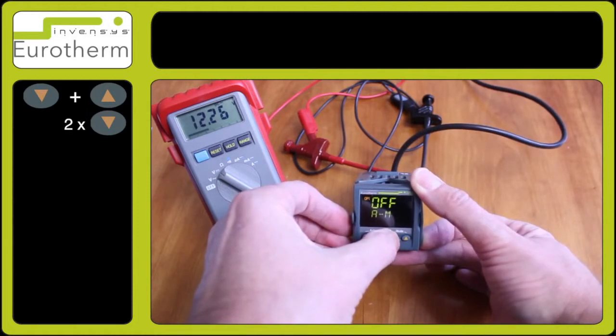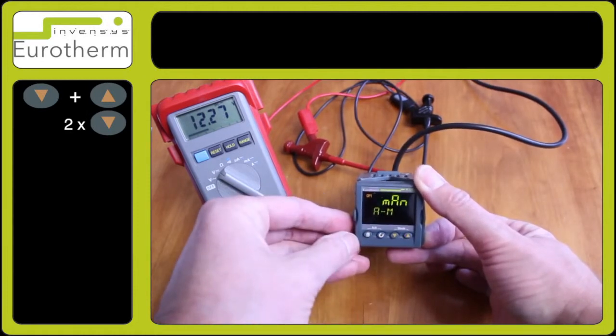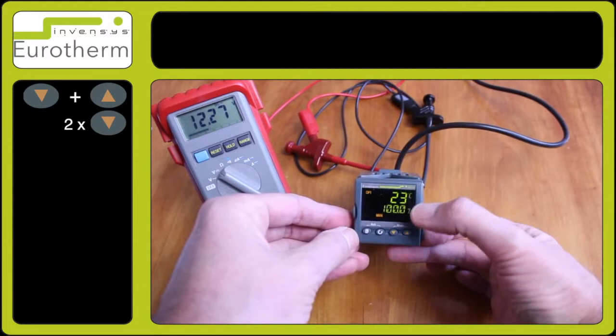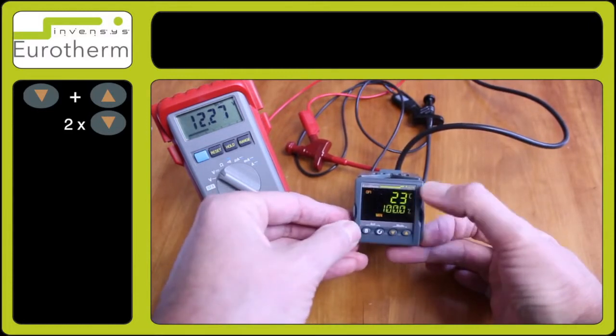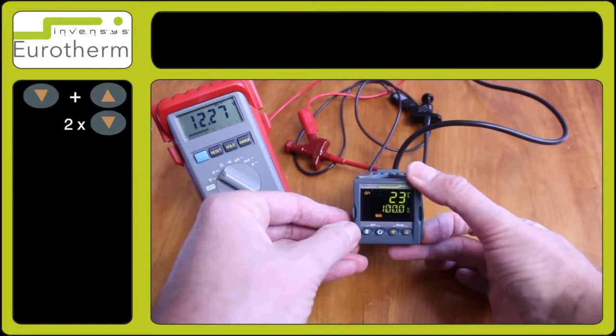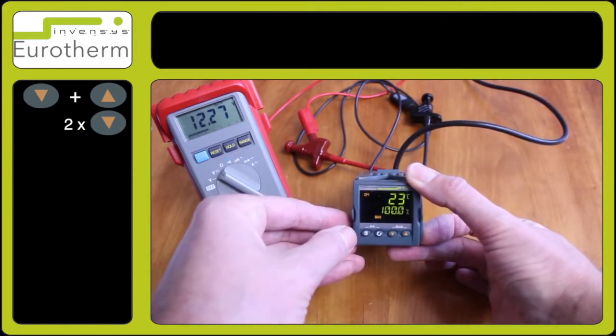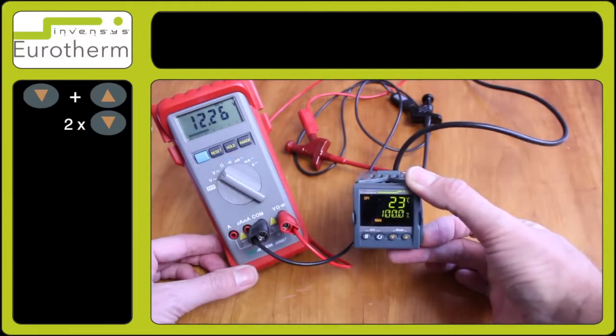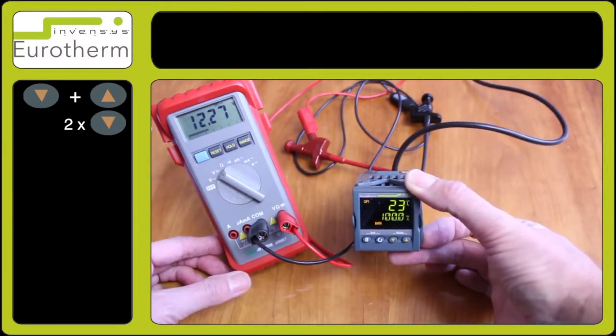This will now give you the output percentage at the bottom and in this particular case this is now reading 100%. For logic output that is approximately 12 volts out so you can see on the display here we have 12 volts.